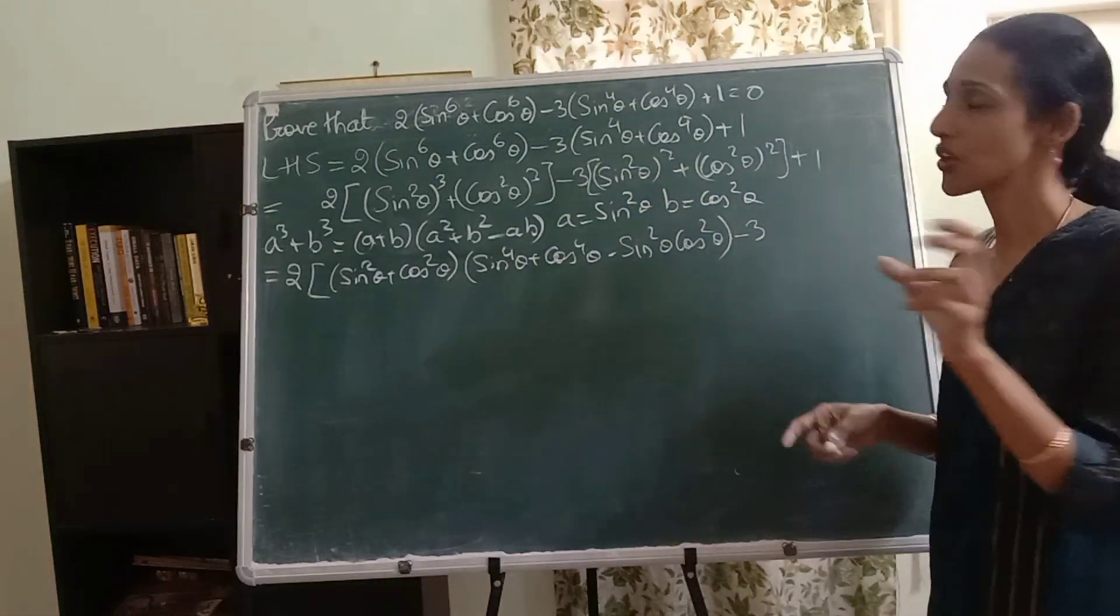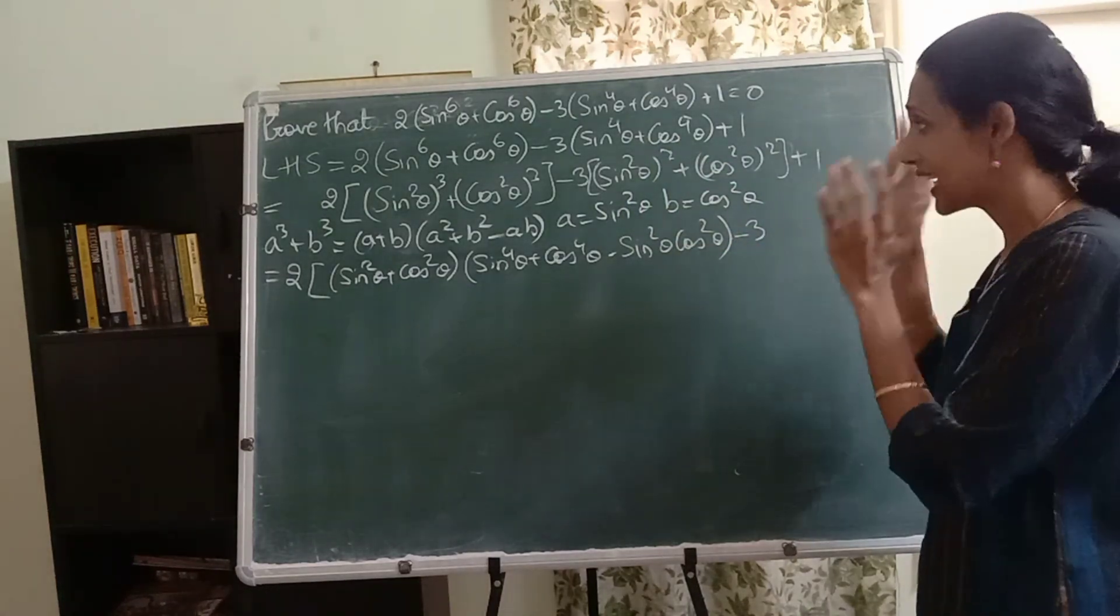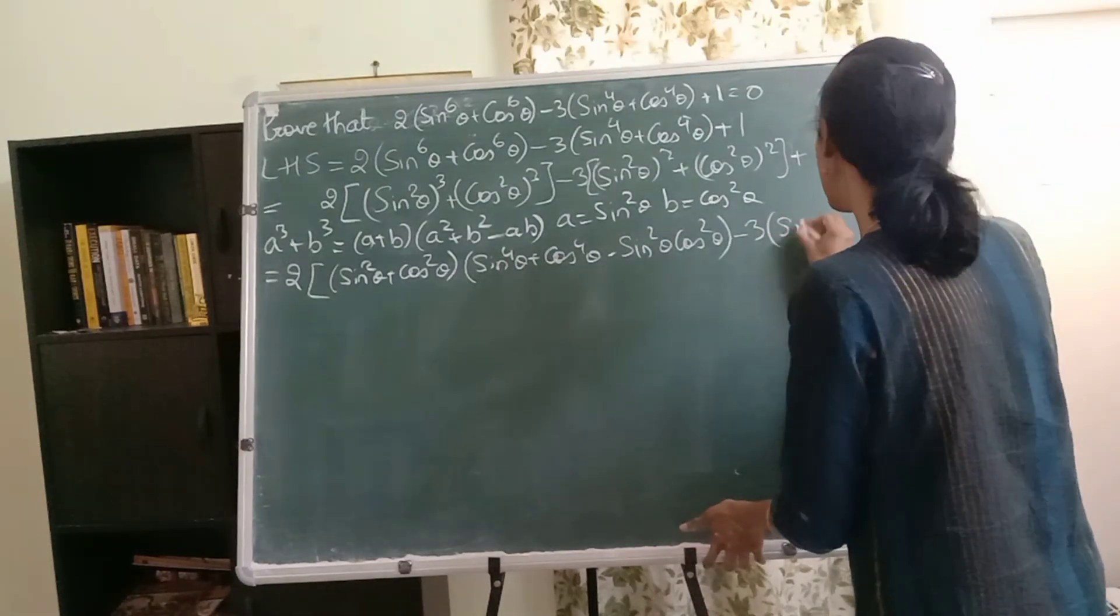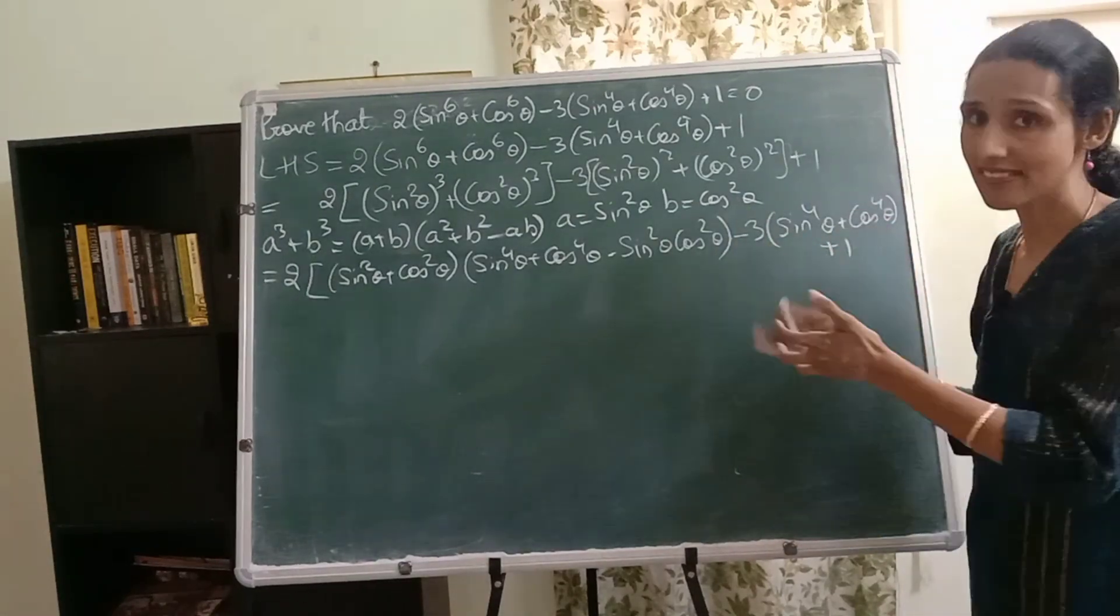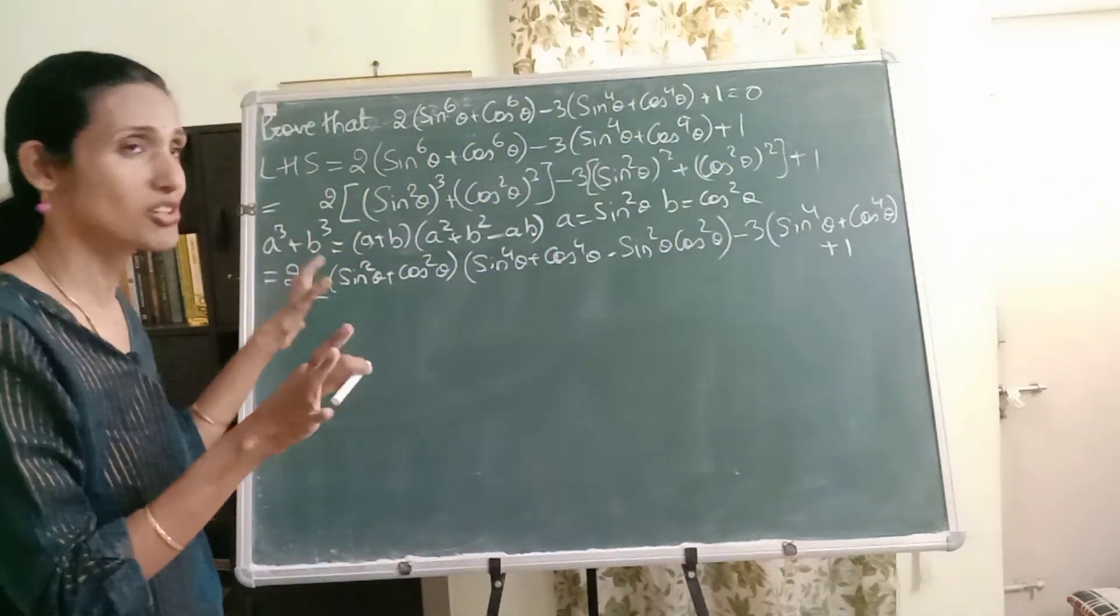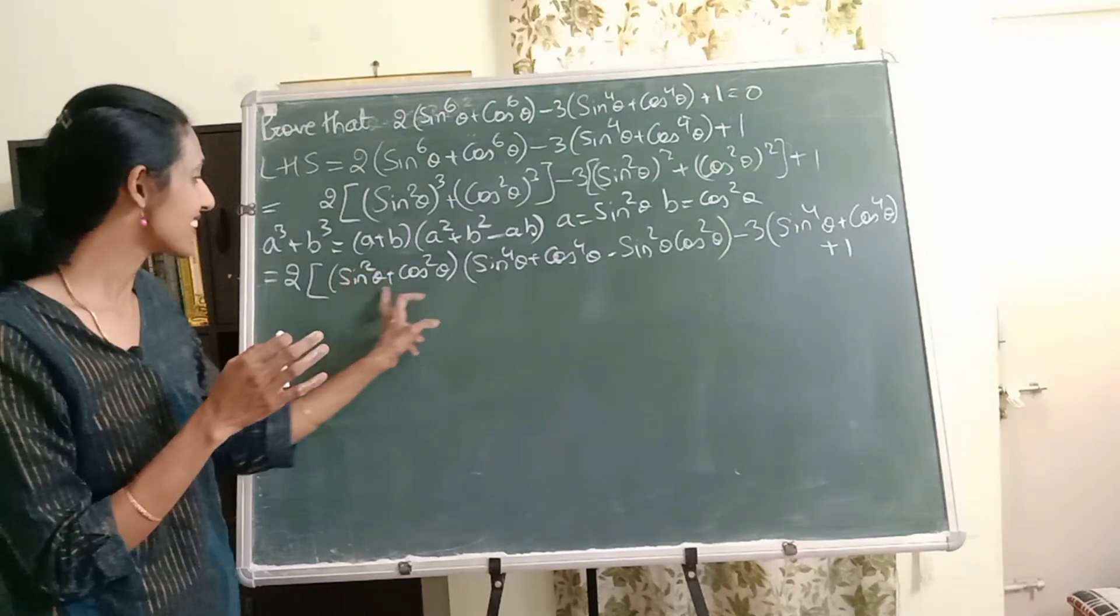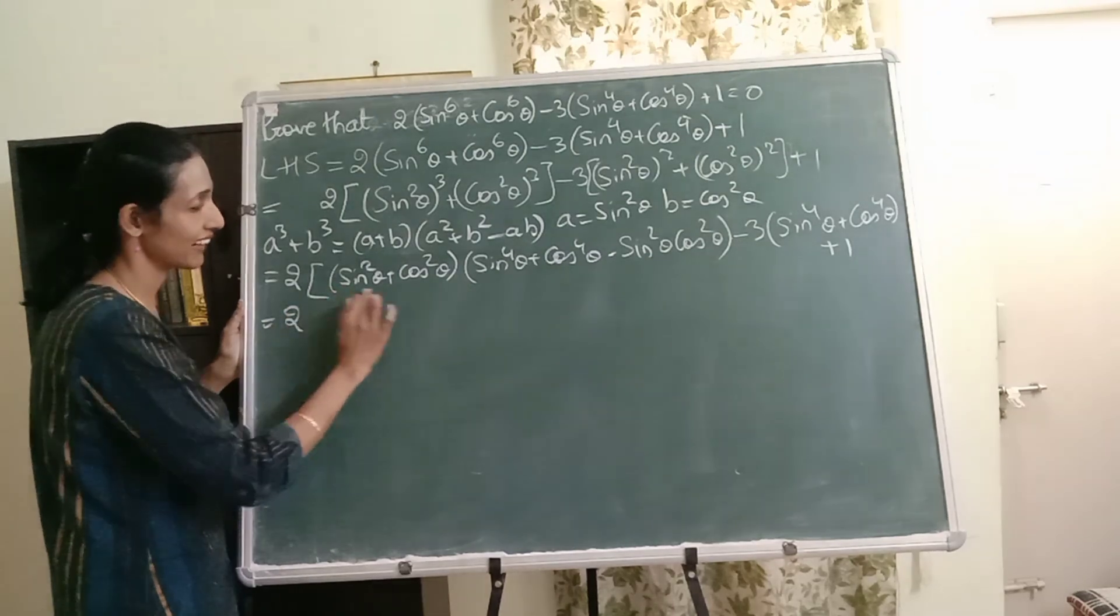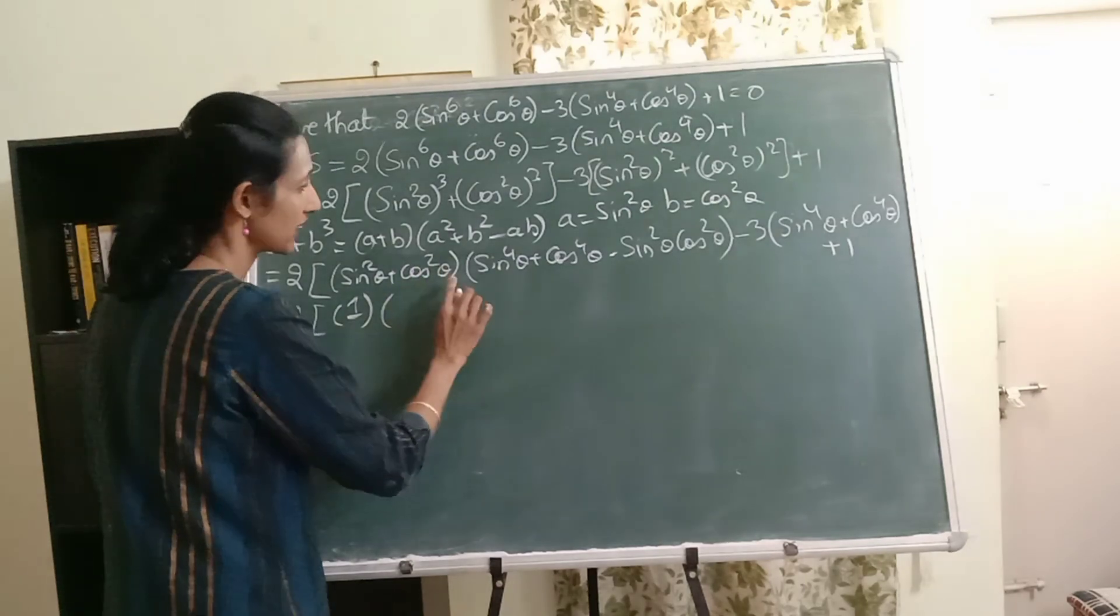Now I don't see any advantage of writing this as sine square theta the whole square, so that's why I'm going to rewrite it as sine raised to 4 theta itself. This happens very often in trigonometry proofs. You do a few steps thinking it will work but then if it doesn't work you will have to go back to the previous step. You have to go with a calm mind. Now did you see this? Sine square theta plus cos square theta. Identity has come. Wonderful. So I can write this entire thing as 1. Sine square theta plus cos square theta is 1.